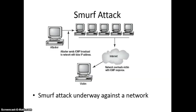A Smurf attack is kind of interesting. Essentially, somebody spoofs an IP address and sends out an all-points bulletin to an ICMP broadcast address — the .255 node on the network. Since it's being spoofed, the victim is overwhelmed by everyone replying back to it. The attacker spoofs the victim's IP address, sends a broadcast to everybody on the network, and the victim is overwhelmed because all those machines reply back to that particular victim.